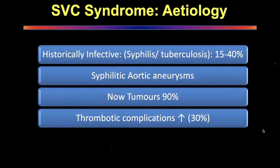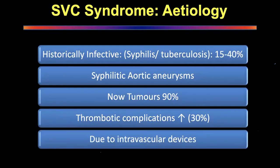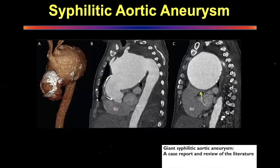The more common complications now are because of tumors — 90% of patients. About 30% are actually thrombotic complications. In the previous generation we did not see as many thrombotic complications; most now are because of intravascular devices — more catheters, angioplasties, and various other devices — hence more intravascular thrombotic events. This slide shows a syphilitic aortitis with a large aneurysm of the arch of the aorta compressing the SVC — something seen last century but very rare now.